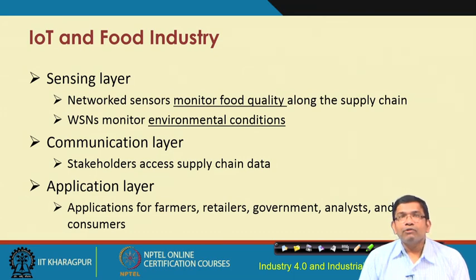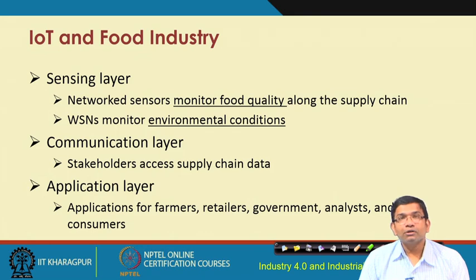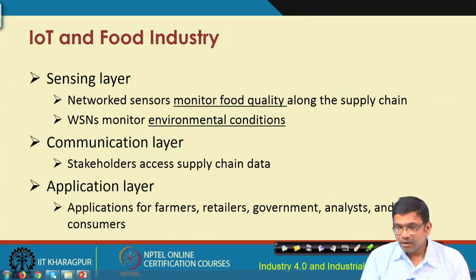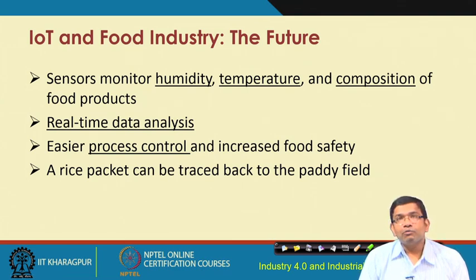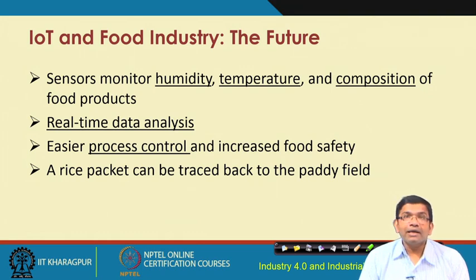At the application layer, we need applications for farmers, retailers, government analysts, consumers, and insurance companies — insurance companies are also very important here. Sensors are needed to monitor humidity, temperature, and composition of food products. The sensors will throw in a lot of data in real time, which will have to be analyzed in real time as well, in order to make the most of the retrieved data.